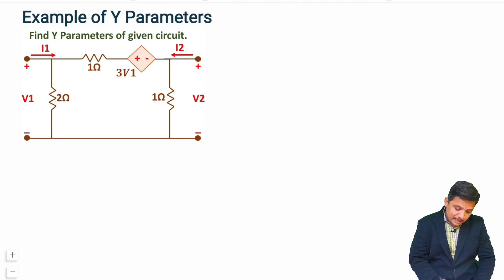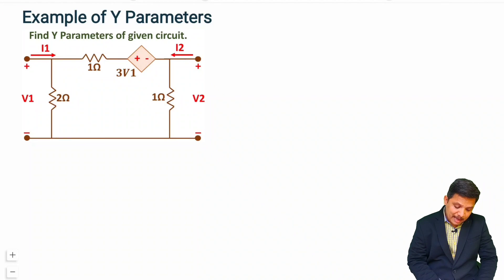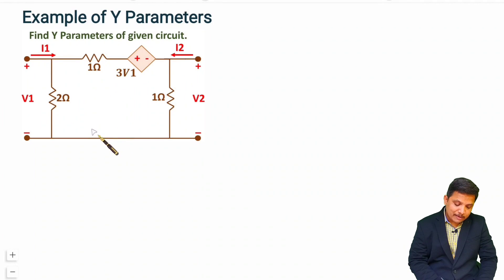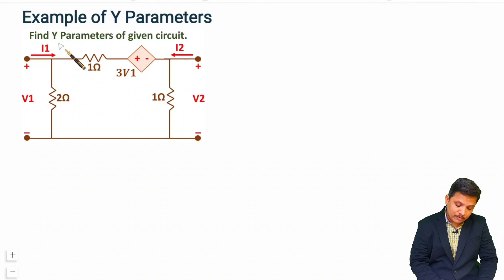In this circuit we have v1, i1, v2, and i2 with this two-port network. When you want to calculate Y parameters, first you check whether the given network is a simple T network or Pi network — in that case only two equations are needed. But here this is not a simple T or Pi network, so we'll follow the basic standard process for calculating Y parameters.